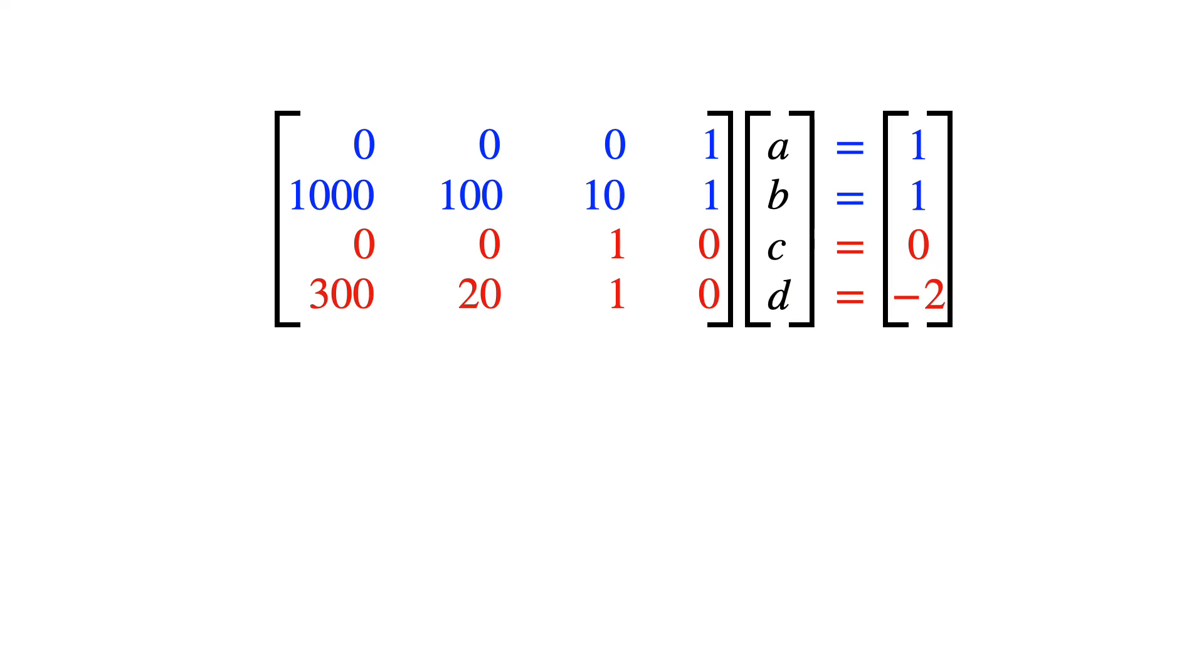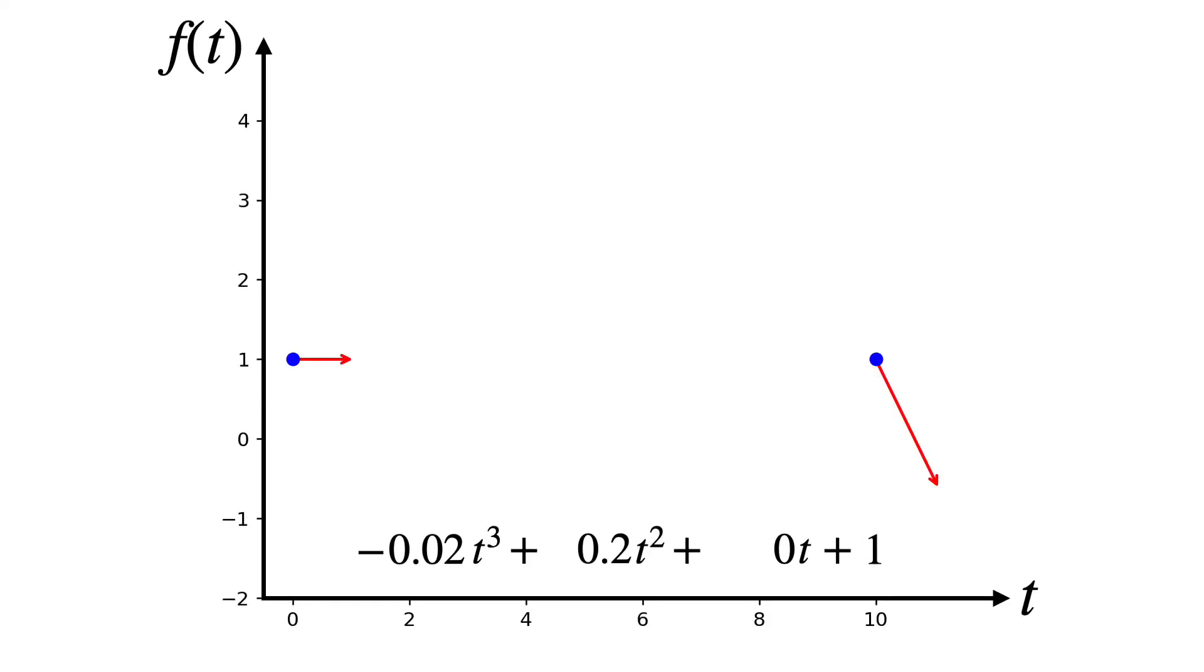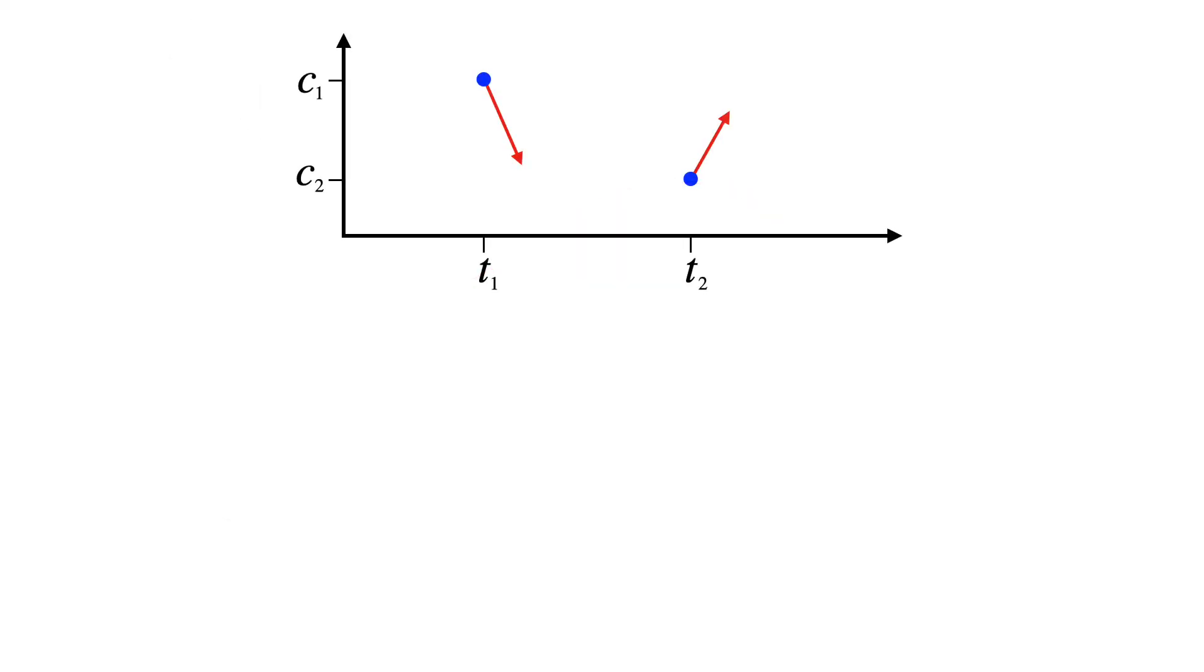We can also write this as a matrix equation and solve it. Here's the solution, and the equation for our curve. Let's plot it. Ta-da! And given any pair of control points and tangents, here's the general form of the constraint matrix.